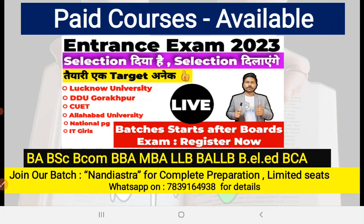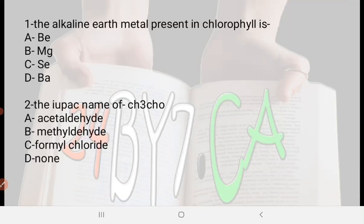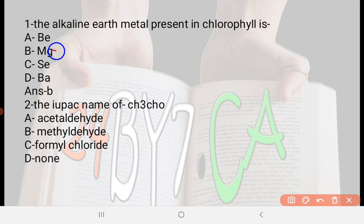Let's start the class. Question number one: The alkaline earth metal present in chlorophyll is — option A: beryllium, option B: magnesium, option C: SE, option D: barium. The right answer is option B, which is magnesium. The alkaline earth metal present in chlorophyll is magnesium.